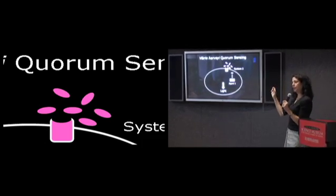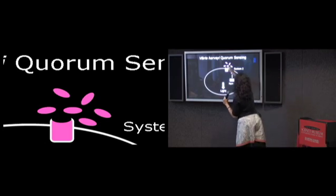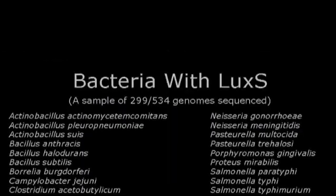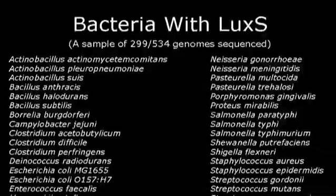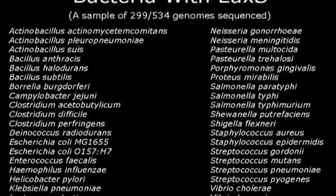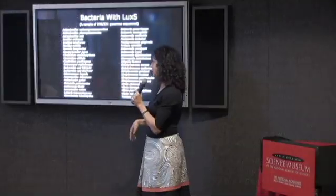You can take your favorite gene and plug it into these databases and ask, does anybody else have that gene? We cloned the gene for this molecule, named it LuxS, put it in the database. And sure enough, all kinds of other species had a highly conserved LuxS gene, and they all made this second molecule.